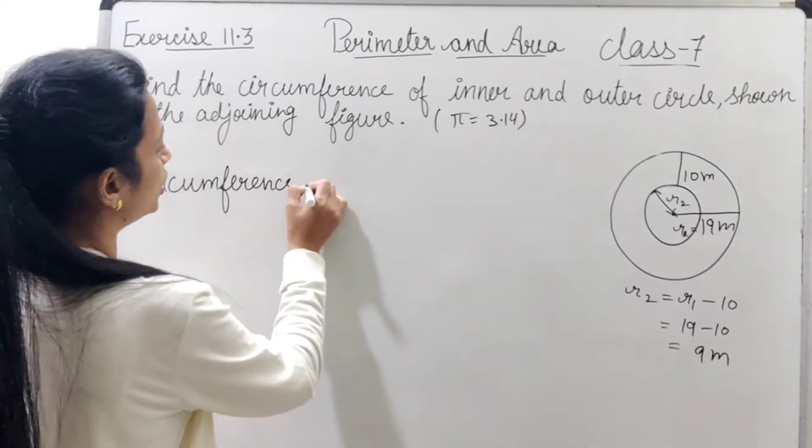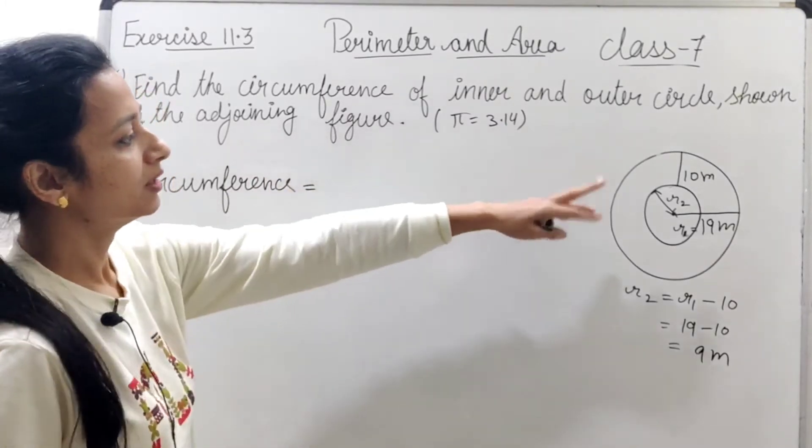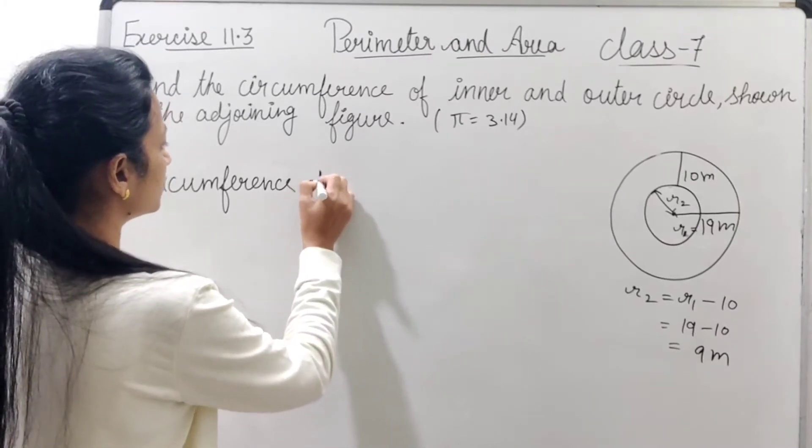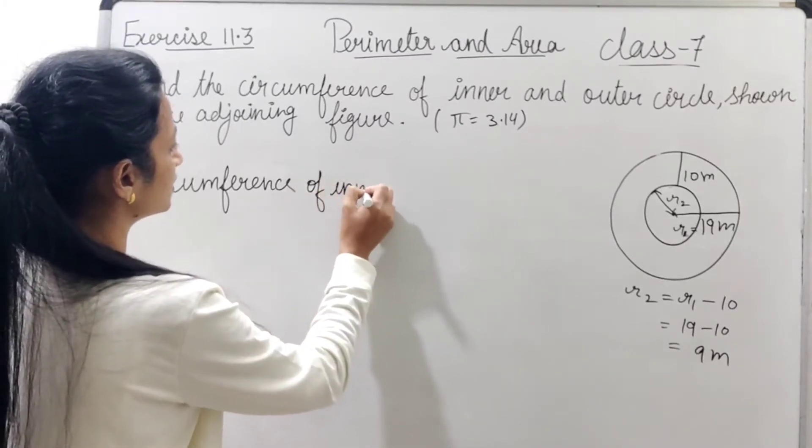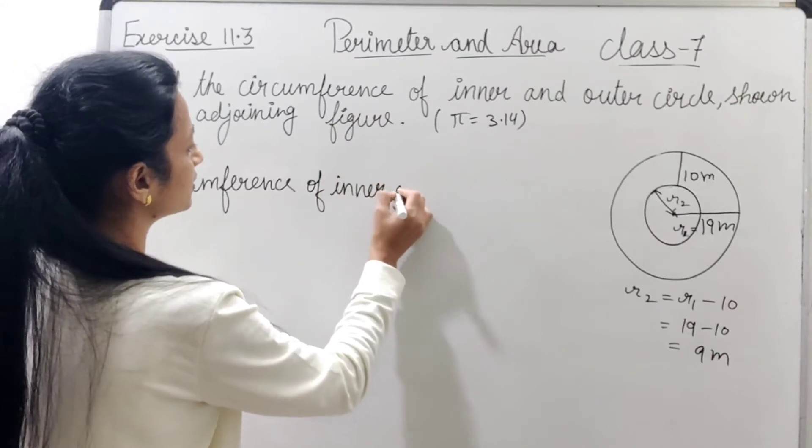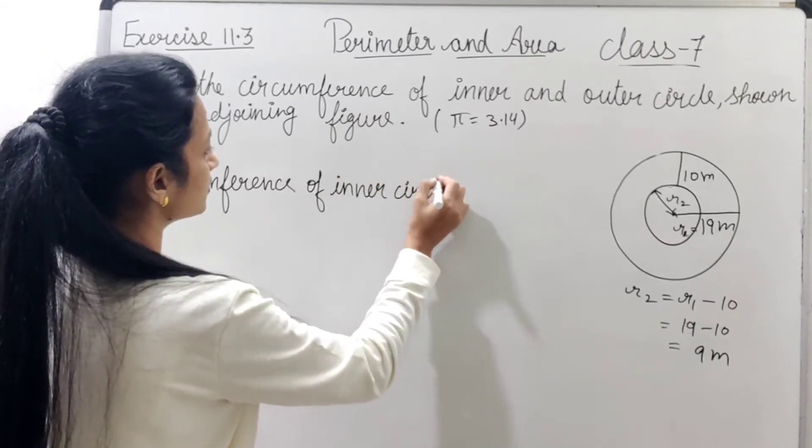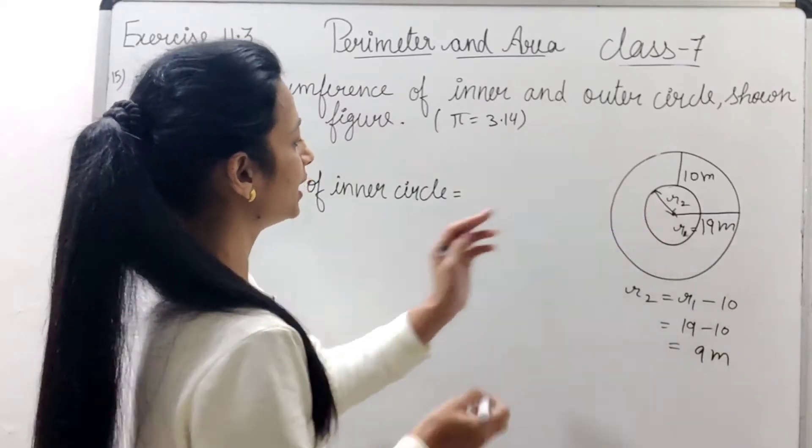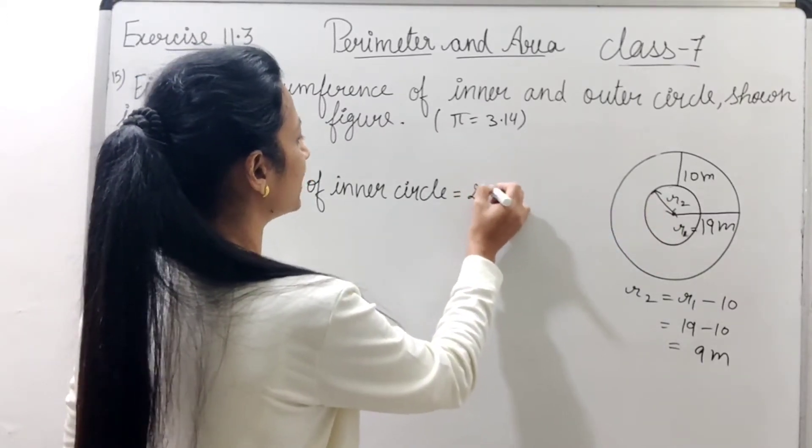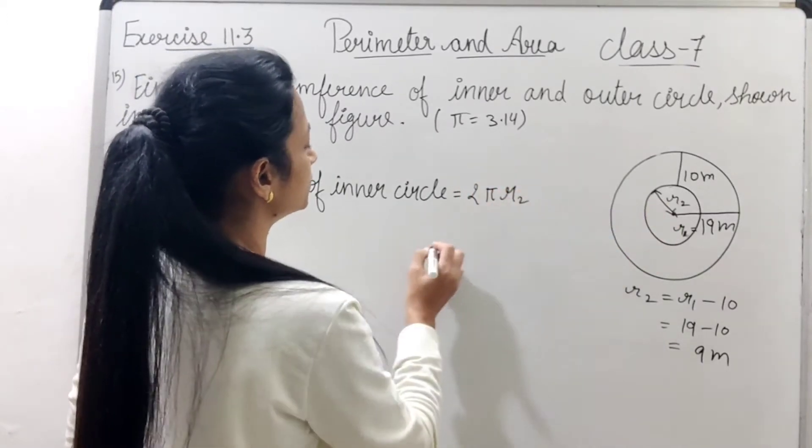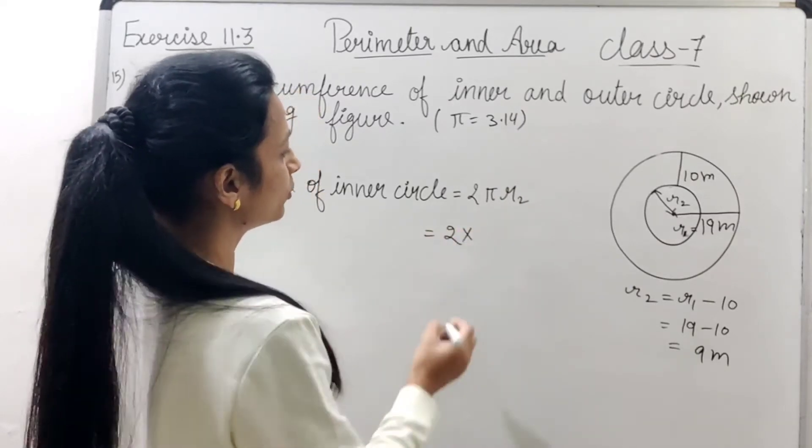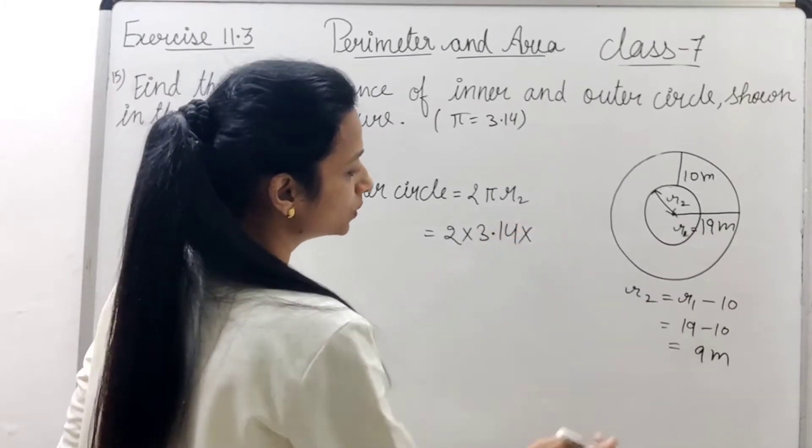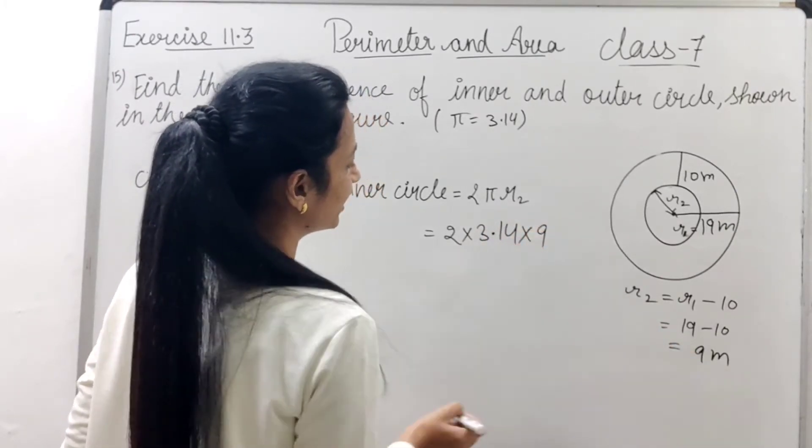Circumference of inner circle equals to, radius के उसकी R2 तो 2πR2 equals to 2 into Pi की value हमें given है 3.14 into R2 की value की आए थी 9 meter.